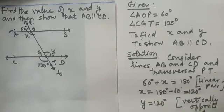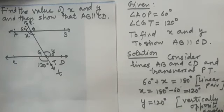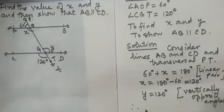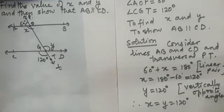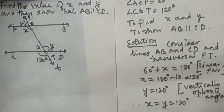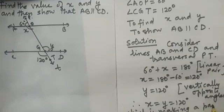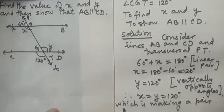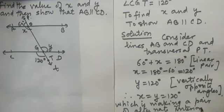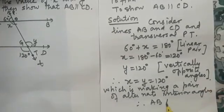Therefore, x equals y equals 120 degrees. Now x and y are making a pair of alternate interior angles, and alternate interior angles are equal. Therefore AB is parallel to CD. I hope it is clear to you.